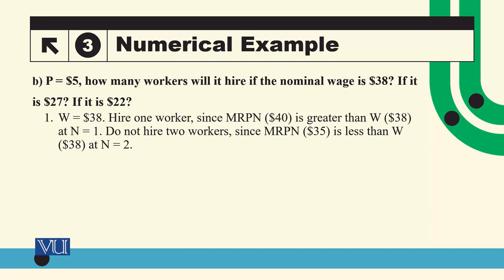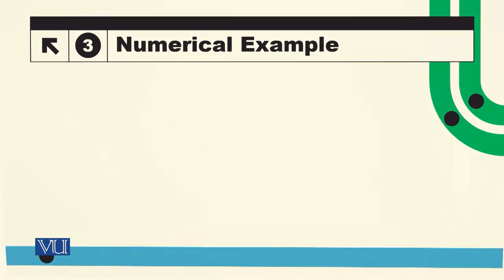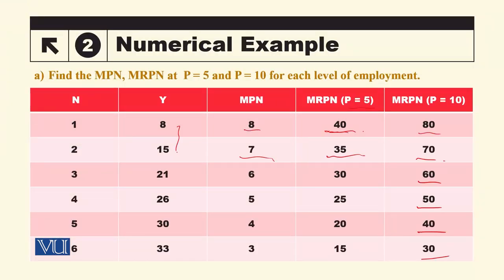Similarly, if the wage rate falls from $38 to $27, what happens? Taking the first case where output price is $5: when wage was $38, the firm hired only one worker because the second worker caused a loss. But if the wage becomes $27, the second worker also becomes profitable. So when wage was $38 it hired one worker, and at $27 it hires three workers. This shows a negative relationship: as wage decreases, the number of workers hired increases — demand for labor increases — giving us a negatively sloped demand curve.